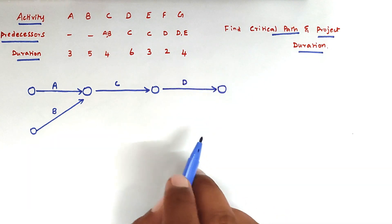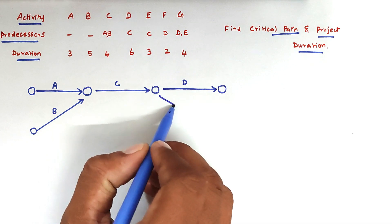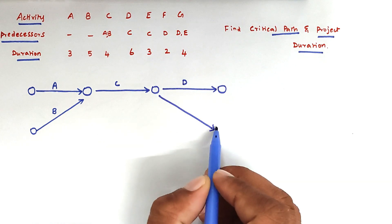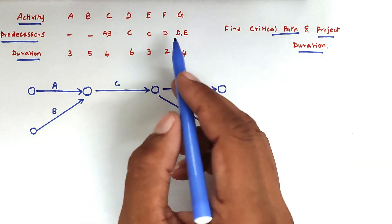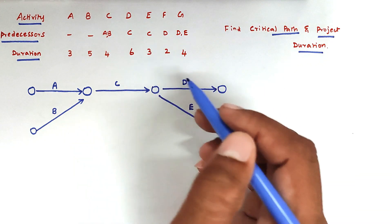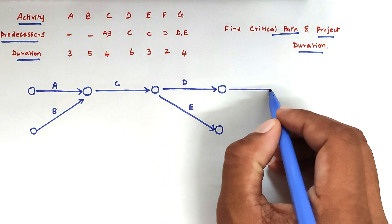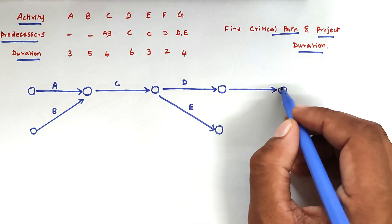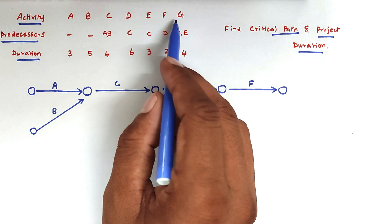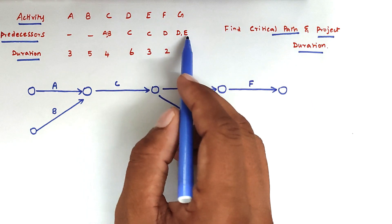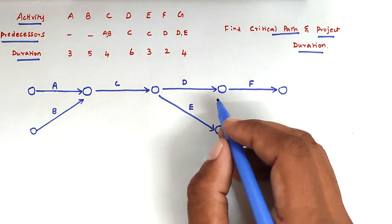For D activity, C is the precedence activity. Then E activity also has C as the precedence activity. For F activity, D is the precedent activity. For G activity, D and E are both the precedent activities.